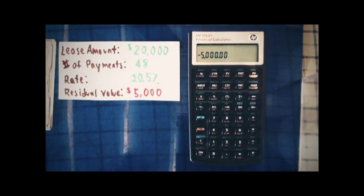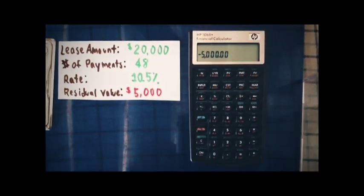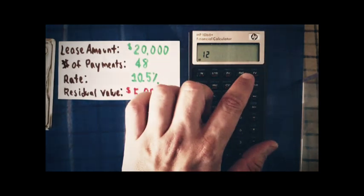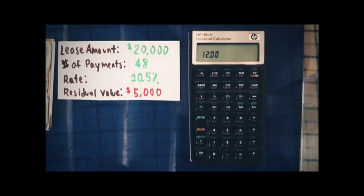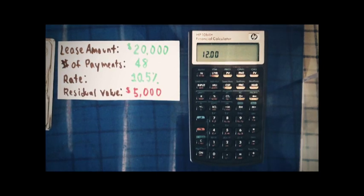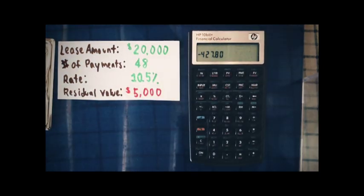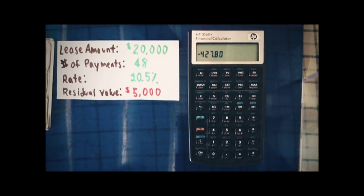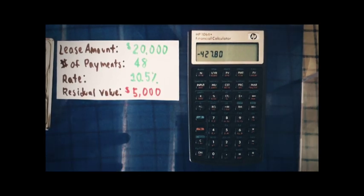I want to make sure we are dealing with monthly payments, so I'm going to enter 12 using the orange shift payment key, which stores 12 into payments per year. Then we calculate the payment, and it turns out the monthly payment is going to be $427.80. This is how you deal with normal, straightforward leases without any special terms.